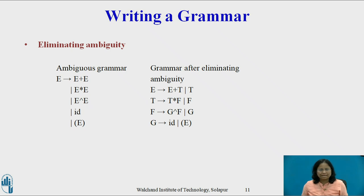This is the second example of eliminating ambiguity from a grammar. This grammar represents a simple arithmetic expression.